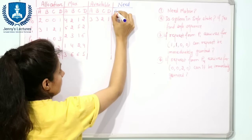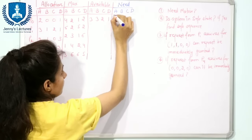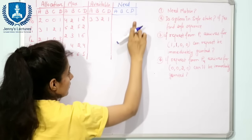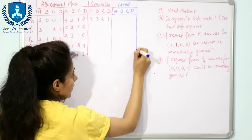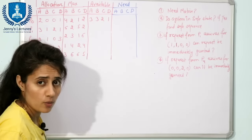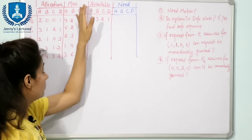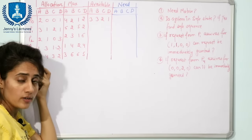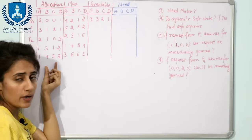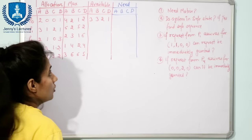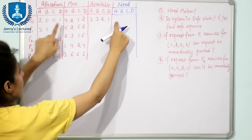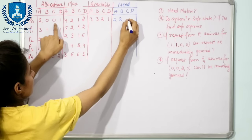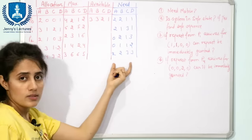The need matrix is calculated as maximum minus allocation for each process, because each process has already told the operating system the maximum resources it will need, and some resources are already allocated. So the need equals maximum minus allocation. For P0, the need matrix would be: 4 minus 2 is 2, 1 minus 0 is 1, 2 minus 1 is 1.